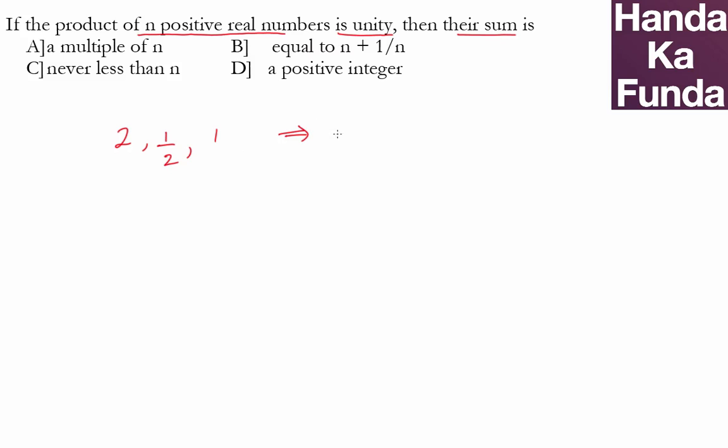What is their sum? Their sum is 3.5. And what is my n? My n is 3.